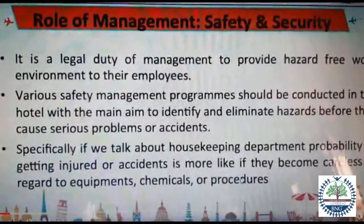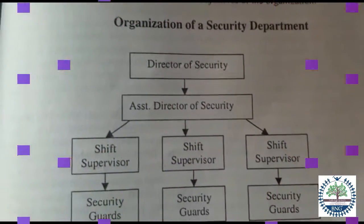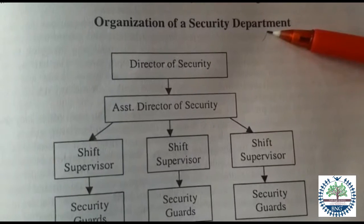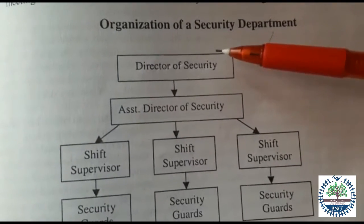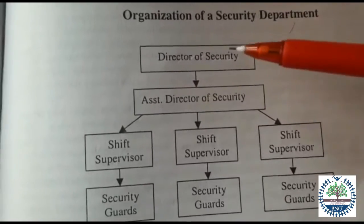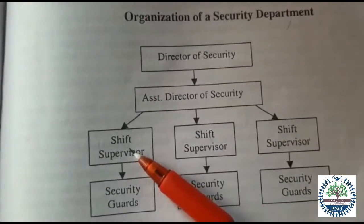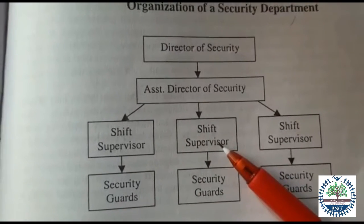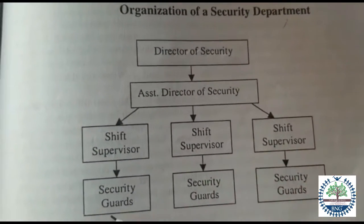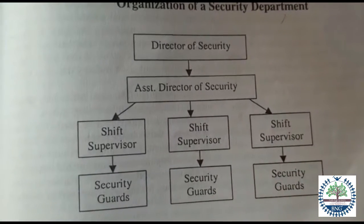We shall move on to our third section of Unit 5. Students, also note this diagram down — this is an organization chart of a security department. At the top we have the Director of Security. Underneath is the Assistant Director of Security, who takes care of the shift supervisors. There are three shift supervisors: one at the main porch which is the reception area, one at the employee entrance, and one who is on rounds. Under each shift supervisor there are associate security guards.